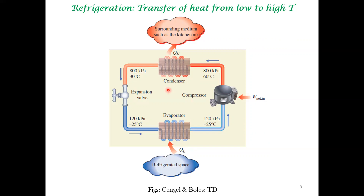Suppose you put some material at room temperature into the freezer section of your refrigerator. The heat from that material — let's say a food item at room temperature — is supplied to a fluid which evaporates. When something evaporates, chemical bonds between the molecules are broken. So the heat supplied goes towards breaking those chemical bonds and evaporates the molecules. These evaporated molecules are then sent into a compressor, which is a work input device — work is put into the system.